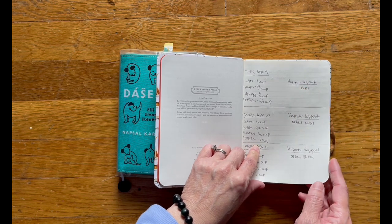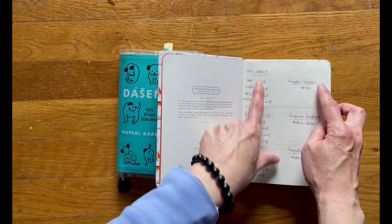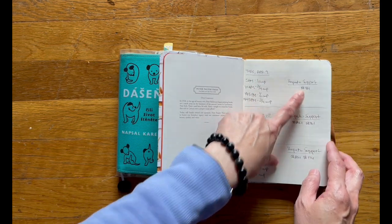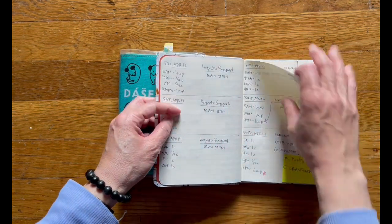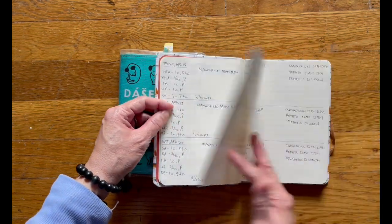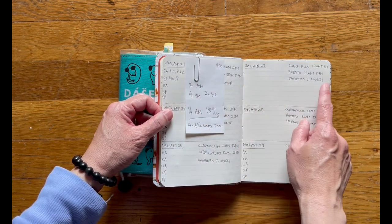So he's currently taking right now a liver support that we started on April 9th at night. And then he is now taking it at morning and at night. So this helps me keep track of what he's taking, and then I can cross it out as I go.